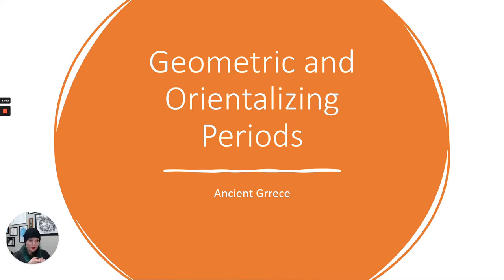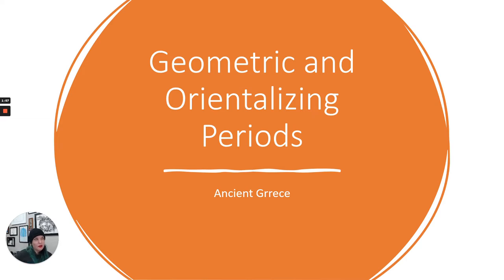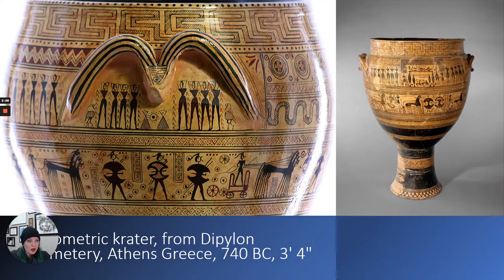We have the Olympic Games, which I mentioned in the intro. We have Homer — the writer we talked about when looking at the prehistoric Aegean — who of course writes the Iliad and the Odyssey, so that's a big piece of ancient Greek culture. We also have the international trade routes open up with Greece, so they're not quite so isolated, and this starts impacting the artwork as well.